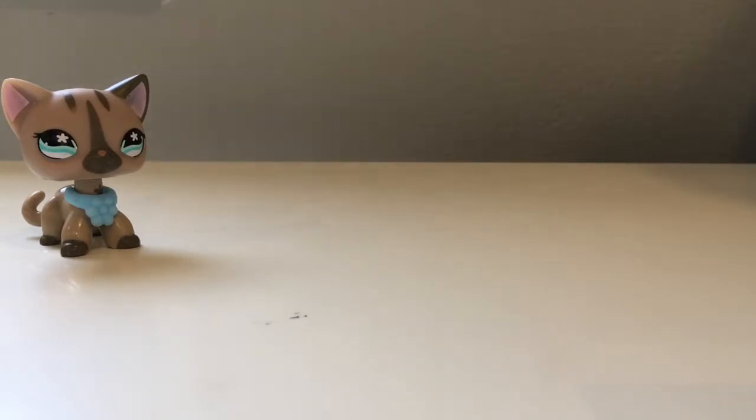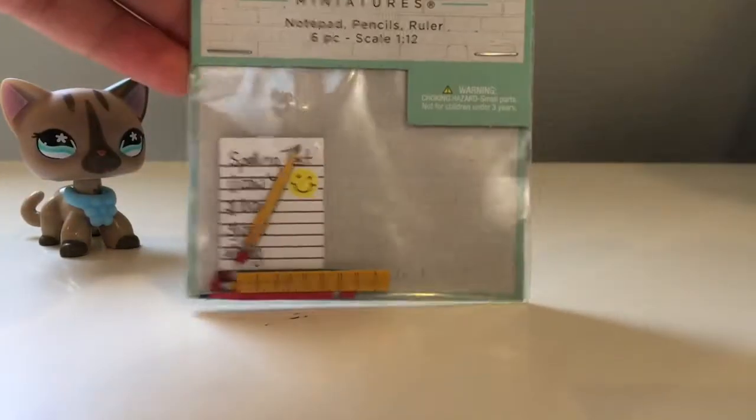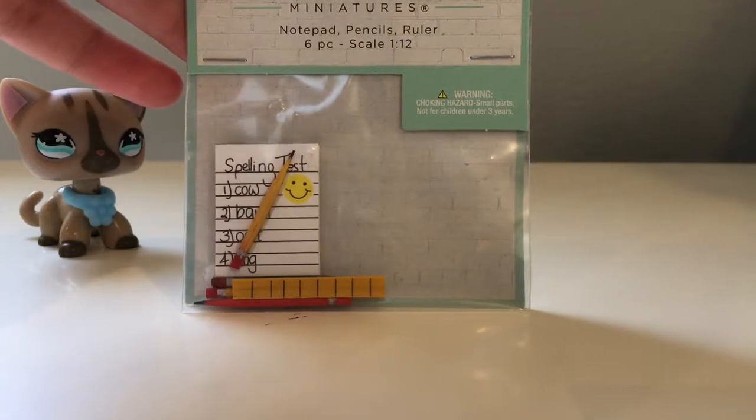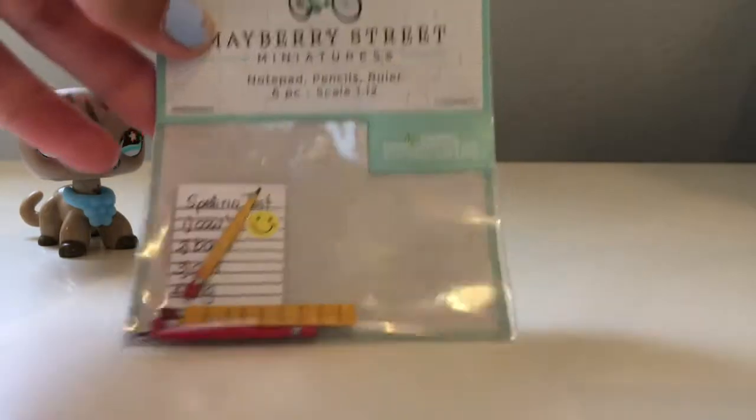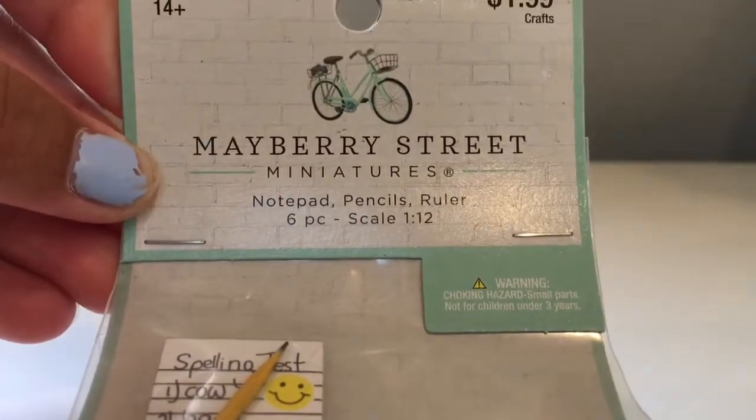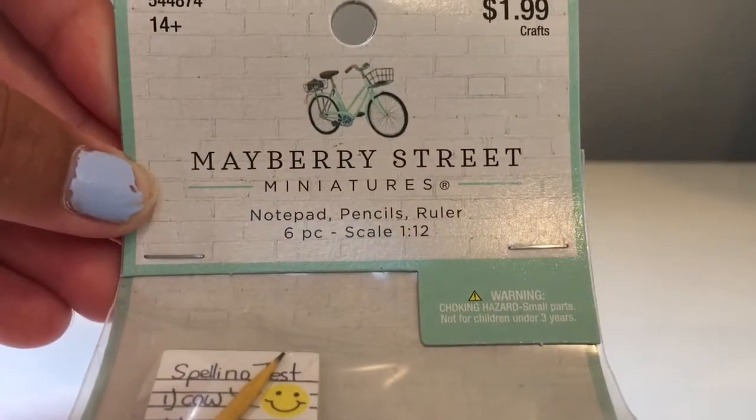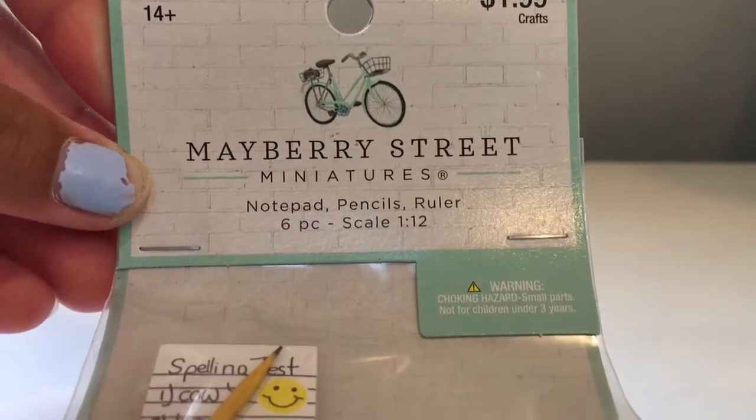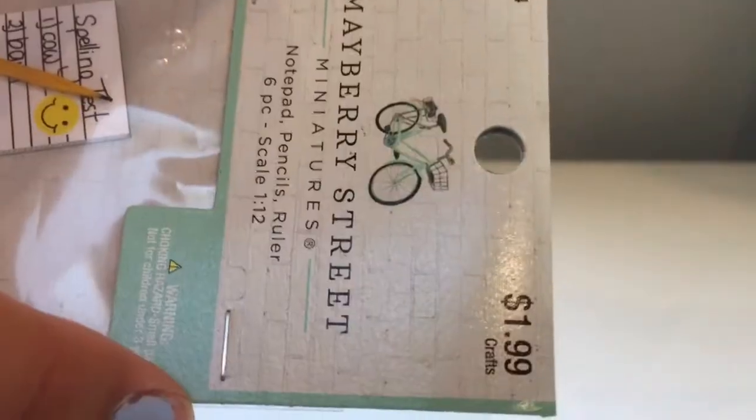Wait, no, I'll do what I'm really excited about second. So first are these - found them at Hobby Lobby. They are Mayberry Street miniatures notepad, pencils, and rulers. Let me open this. It has a really cute little brick background.